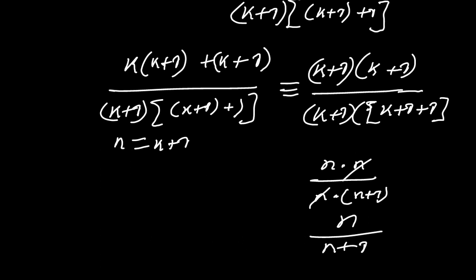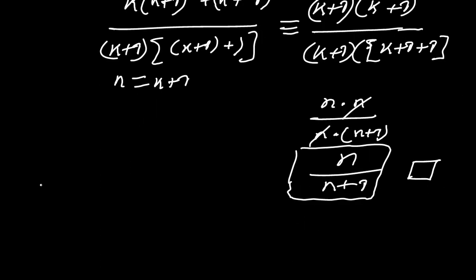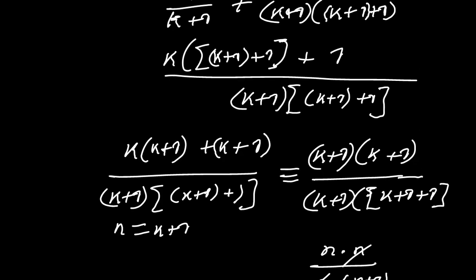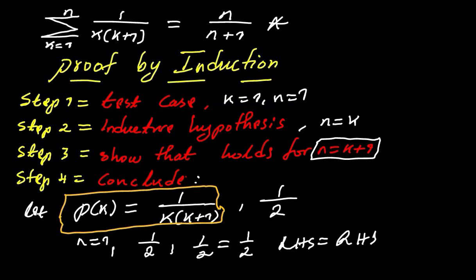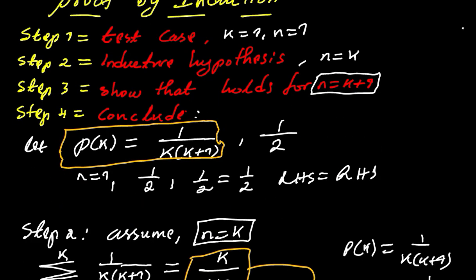This is the conclusion — the proof is complete, written as QED or 'as required.' The fourth step, which is not really necessary, is just to state: since it is true for the test case and the inductive hypothesis, and since all three steps hold, the right hand side equals the left hand side. That's everything about proof by induction. If you found value in this video, please subscribe.